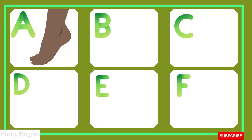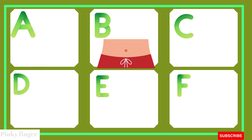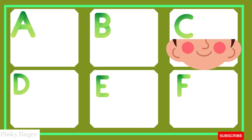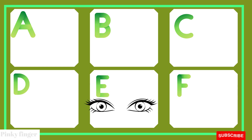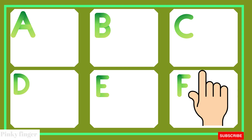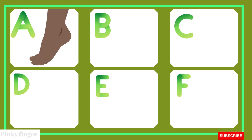We'll go to the next one. A is for ankle. Ankle. B is for belly. Belly. C is for cheeks. D is for dimple. Dimple. E is for eyes. Eyes. F is for finger. Finger. A is for ankle. B is for belly.